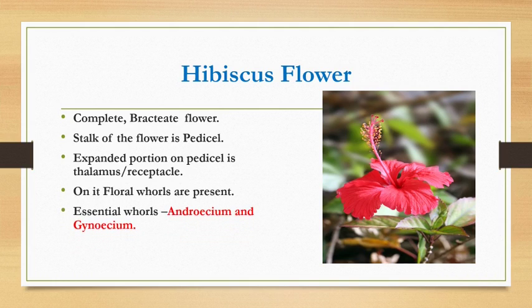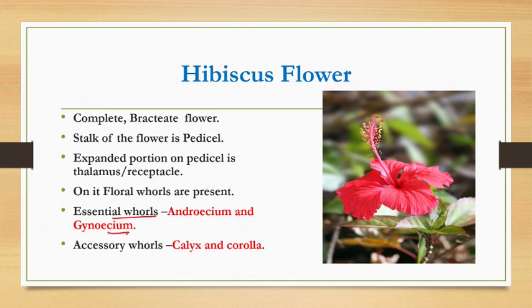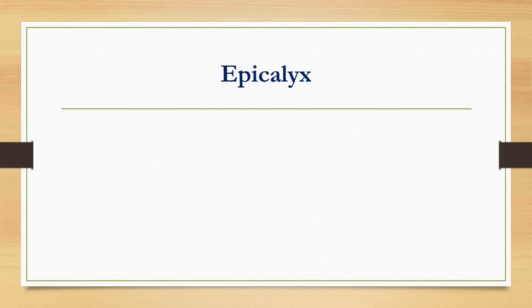It has two essential whorls called androecium and gynoecium. They are called essential because they participate in reproduction. The accessory whorls are calyx and corolla, which function in attracting insects or protecting the flower.